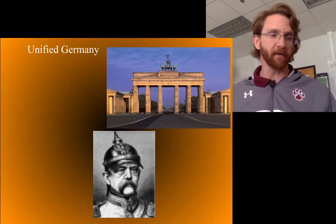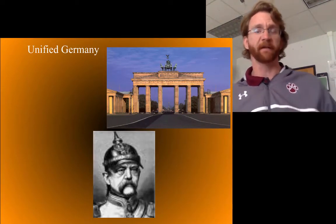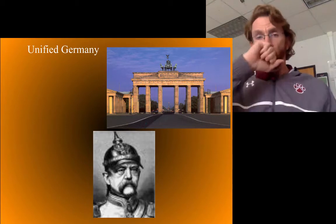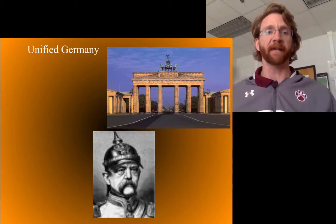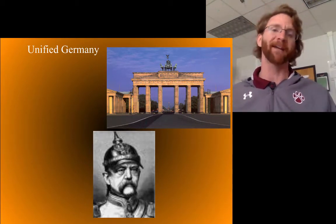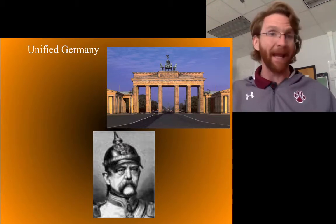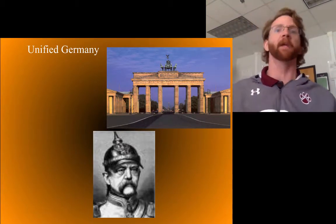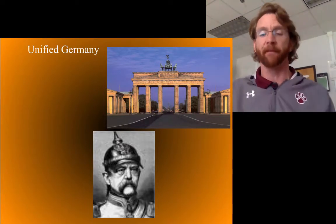All right gang, today is our last installment of politics in the 19th century Europe. Today we're going to take a look at a unified Germany and how Germany became known as Germany, stopped being known as Prussia, and became united.